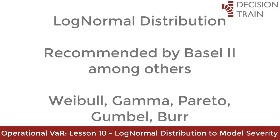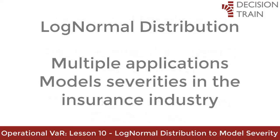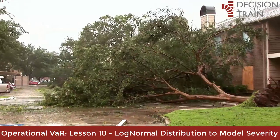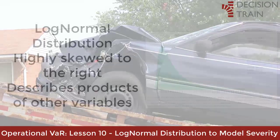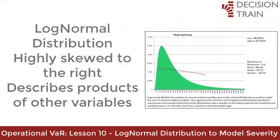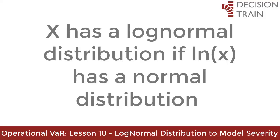The log-normal distribution has multiple applications — in real life it may be used more often than the normal distribution itself. For example, as mentioned, the log-normal distribution is quite common for modeling severities in the insurance industry. It describes variables that are highly skewed to the right, meaning large values of X have much lower probabilities than values in the opposite direction. Log-normal distributions describe products of other variables.